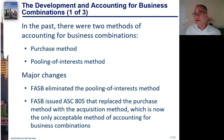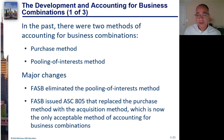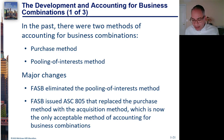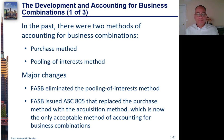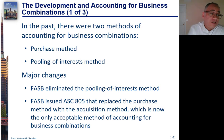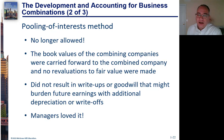If you missed any one of the 12 criteria, then you had to use purchase accounting. Naturally, companies liked pooling, for reasons I'll explain in a few minutes. So what they would do is investment bankers would structure the acquisition so that the criteria for pooling was met if they could. And if they couldn't do it, then they would have to use purchase, which they didn't like. But companies always wanted to use pooling if they could.